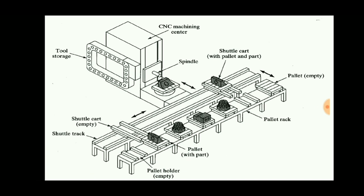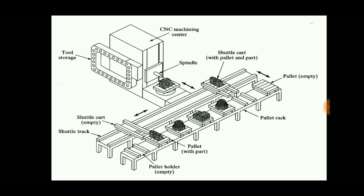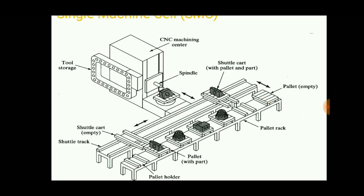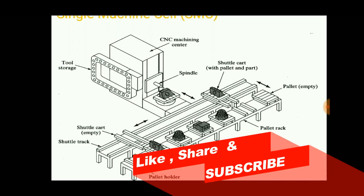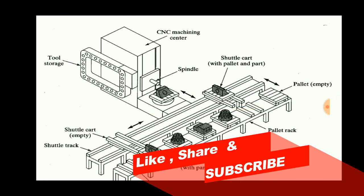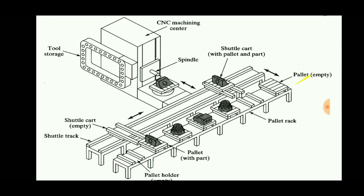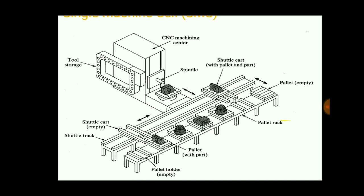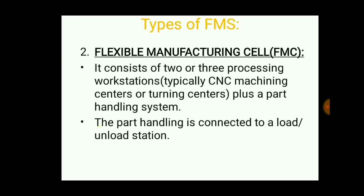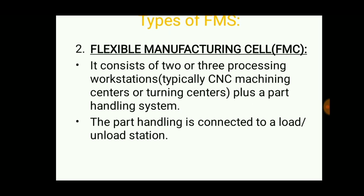Based on the codes, we can change the machining processes or operations so that we can get different parts at any time, in any sequence. Tool storage is also present on the CNC machine; when tool wear occurs, the tools are automatically changed by the automatic tool changer. The completed parts are then transported to the next system by an automated storage system.